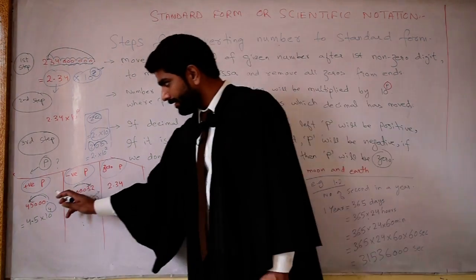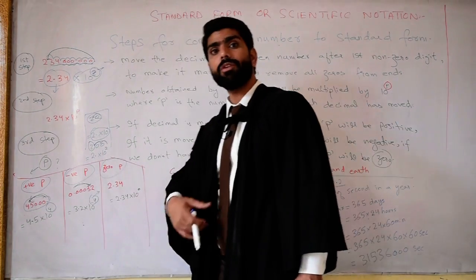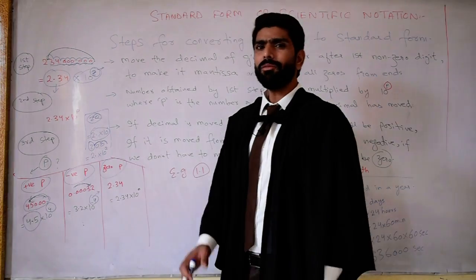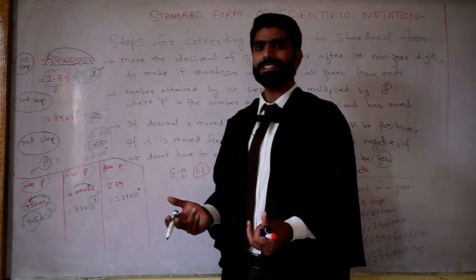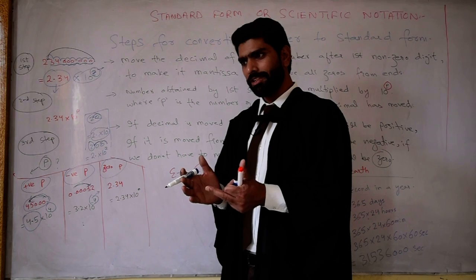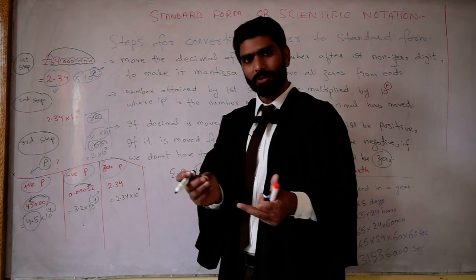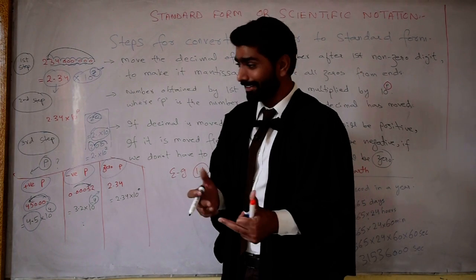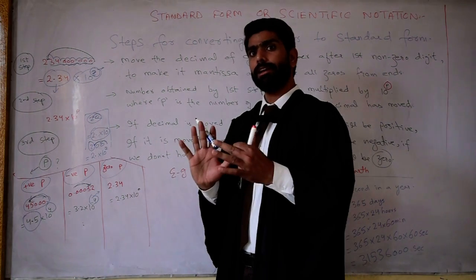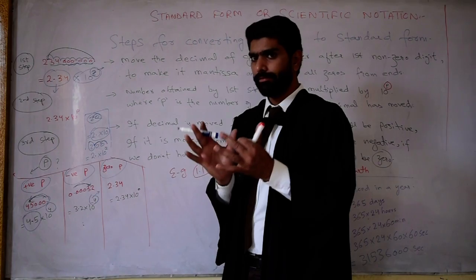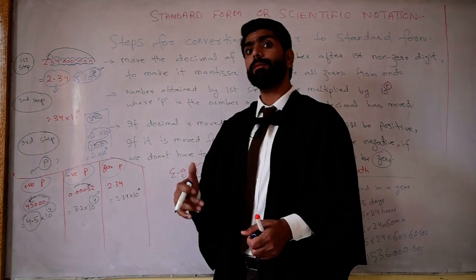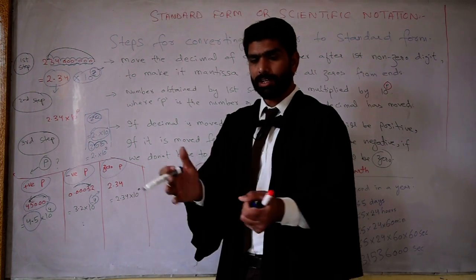Here is the number 45,000. If we just write 45,000 as 4.5, that is not correct — the value changes. If someone has 45,000 rupees, you cannot return them only 4.5 rupees. So we have to keep the value as 45,000 but write it in compact scientific form. If we write 45,000 as 4.5 with a negative power of 10, we would make the number even smaller, which is wrong for a large number.